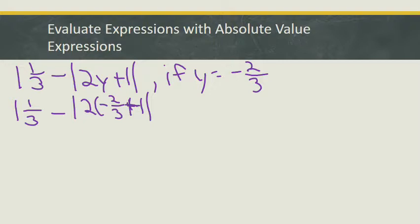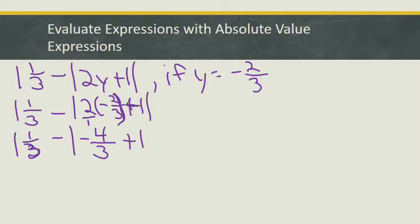Again, I've got this absolute value symbol — it represents a grouping. So I'm going to now multiply. First thing I'm going to do within that absolute value expression is multiply 2 times minus 2/3. When I do, I'm multiplying numerator times numerator, denominator times denominator — I could look at that 2 as 2 over 1. So that's going to give me minus 4/3 plus 1, absolute value of minus 4/3 plus 1.